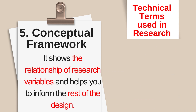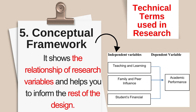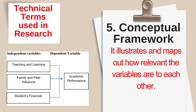Number 5: conceptual framework. It shows the relationship of research variables and helps you to inform the rest of the design. This is usually under the methodology part of your paper. As you can see in the sample, researchers use a chart in making a conceptual framework. The sample shows the relationship of variables such as teaching and learning, family and peer influence, and students' financial status with academic performance. It illustrates and maps out how relevant the variables are to each other. In developing the conceptual framework, it must make sense based on existing studies or theories from your literature review.